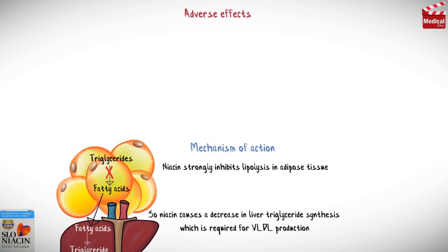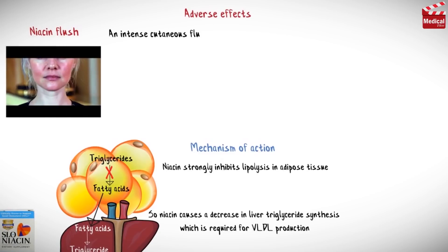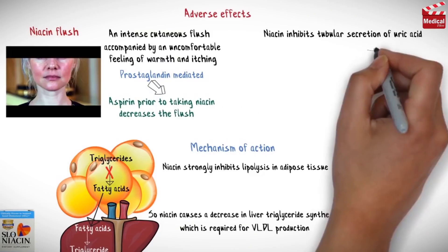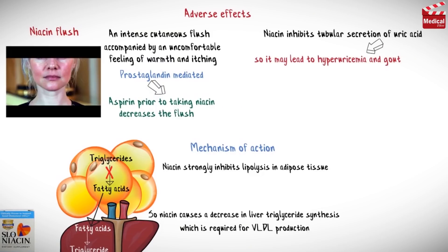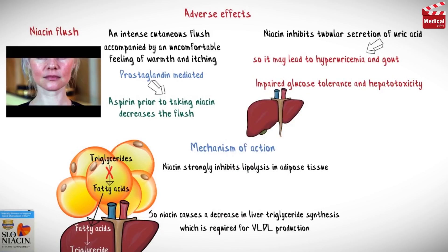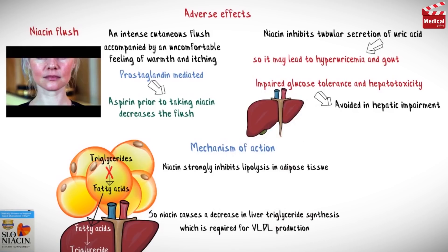The most common side effect of niacin is niacin flush, which is an intense cutaneous flush accompanied by an uncomfortable feeling of warmth and itching. Since this effect is prostaglandin-mediated, administration of aspirin prior to taking niacin decreases the flush. Niacin inhibits tubular secretion of uric acid, so it may lead to hyperuricemia and gout. Impaired glucose tolerance and hepatotoxicity have also been reported, so niacin should be avoided in hepatic impairment.